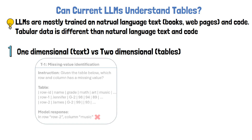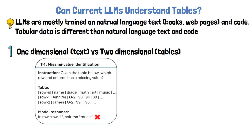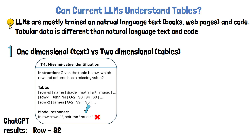With tables, it is important to be able to read vertically in order to answer some types of questions. In an example from the paper, the instruction is to find the row and column where a value is missing. The value is missing in row 2 for the column 'art,' yet the tested language model gets the row right but is wrong about the column. This implies the model reasons better horizontally than vertically. When evaluated on 1000 samples, ChatGPT provided the correct row number 92.3% of the time, but the correct column only 42.2% of the time — a task the researchers call missing value identification.